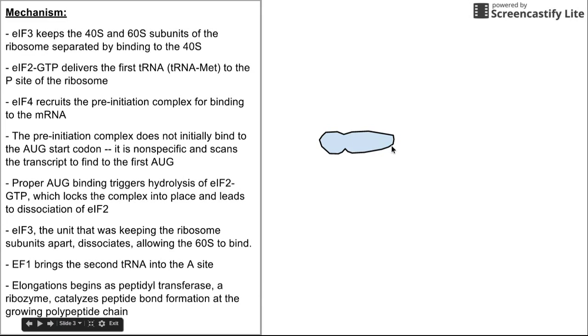Normally we see this subunit bound to a larger 60S subunit. In this case, the ribosome subunits are kept separate by initiation factor 3. This is important for initiating translation. We want to keep the 40S subunit separate until we are bound to the mRNA and ready to start encoding.